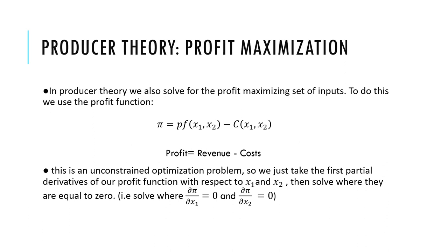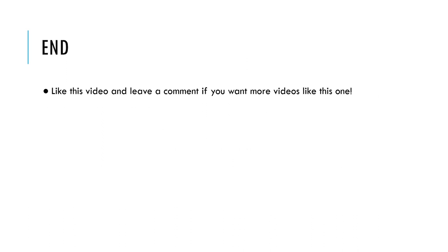In producer theory, we also solve for the profit-maximizing set of inputs. To do this, we use the profit function, where profit equals revenue minus costs. Revenue is defined as price times quantity as defined by our production function. This is an unconstrained optimization problem, so we take the first partial derivatives of our production function with respect to X1 and X2 and solve where they are equal to zero.